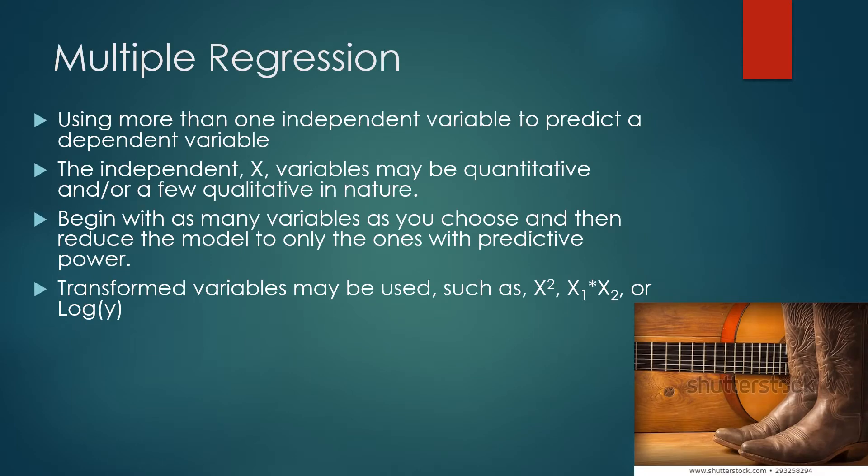Multiple regression will involve using more than one independent variable to predict a single dependent variable. The independent variables are x's, and they're typically quantitative, but some may be qualitative. And then we'll use as many variables as we can possibly think of, but reduce the model to only the ones that have good predictive power.